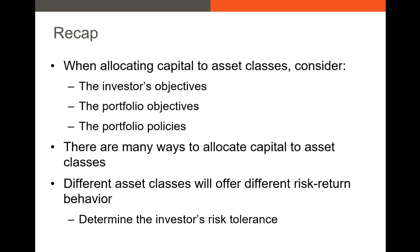Let's recap. When allocating capital to your asset classes, always consider three main things: your individual objectives, your portfolio objectives, and your portfolio policies — what are the red lines you're not going to cross? There are many ways to allocate your capital, and different asset classes offer different risk-return behaviors. Stocks, hedge funds, and real estate are the asset classes that give you high returns but require you to take on more risk, so you need to be comfortable with risk if you're investing in those assets. I'll follow up with this information in the next video.